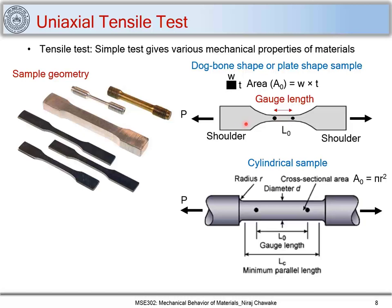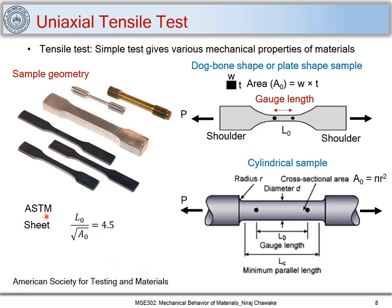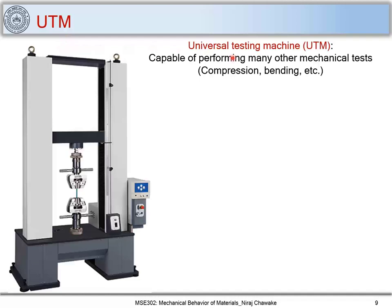In engineering, load versus displacement behavior is strongly influenced by sample geometry. To avoid this effect, we follow certain standards. These standards are given by ASTM — the American Society for Testing and Materials. For a sheet sample, we follow the ratio of gauge length to the square root of cross-section area as 4.5, while for a round sample, L by diameter is 4.4.